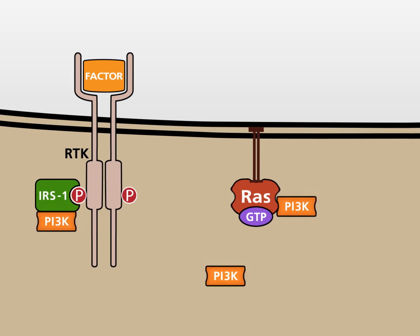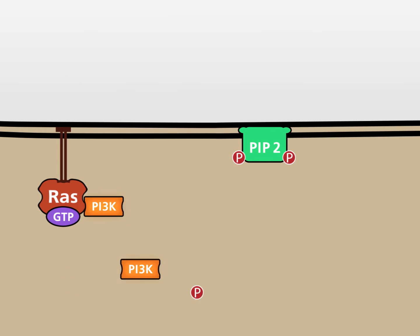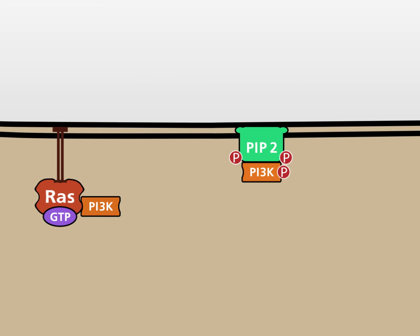The active PI3 kinase migrates to the inner side of the cell membrane and binds to phosphatidylinositol 4,5-bisphosphate, or PIP2, which is a regular component of the membrane and is anchored by its two fatty acids in the lipid layer of the membrane. PI3 kinase is able to phosphorylate PIP2 to PIP3.